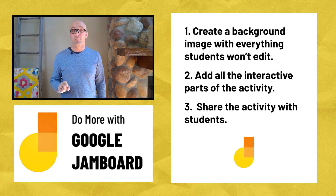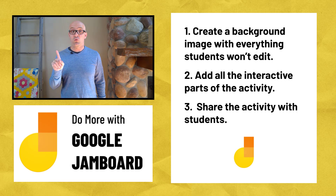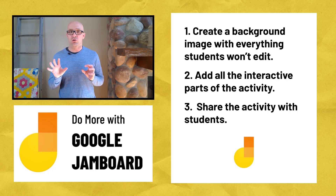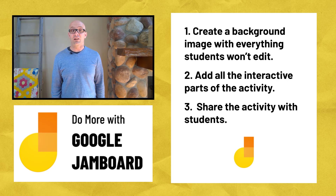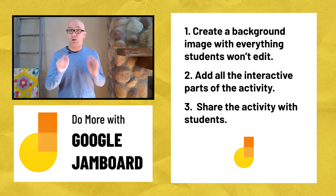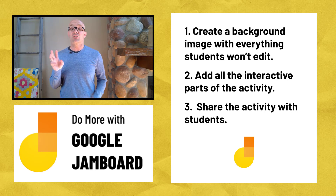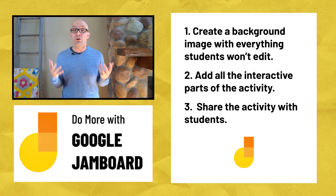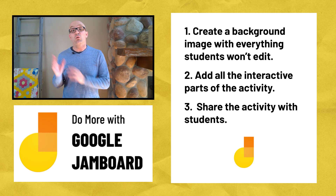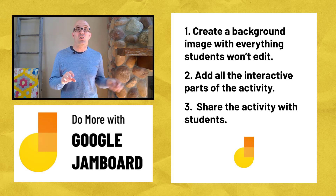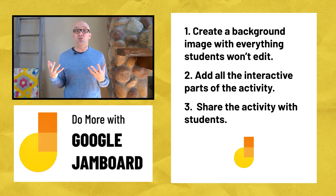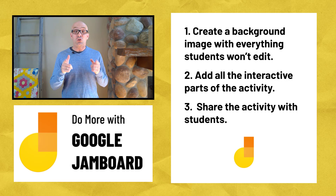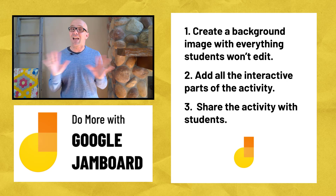Let's review those steps one more time. Step one is to create a background image with everything you don't want your students to edit — that background image will lock everything into place so students can't change or delete it. Step two is to add all of the interactive parts of the Jamboard activity you do want your students to edit. Step three is to share that Jamboard activity with your students through an assignment or through a link. Now that you know those three steps, you're able to create great learning experiences — as simple as adding a sticky note, or as intricate and complex as jams with lots of frames and lots of moving pieces. You have all of the control and can create exactly what your students need.